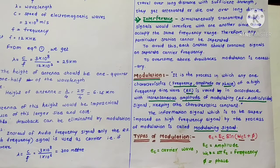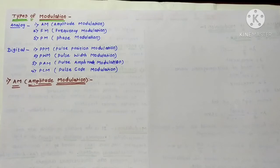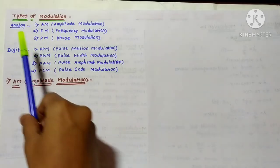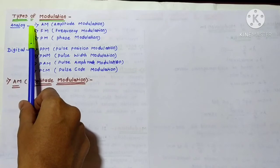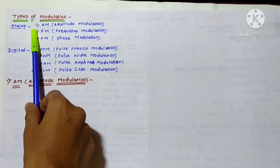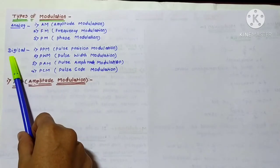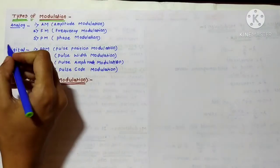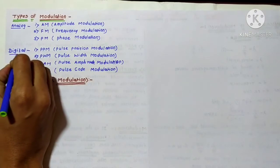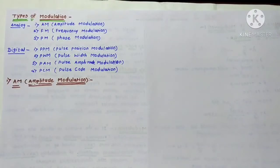There are two main types of modulation. The first type is analog modulation and the second is digital modulation, which you have already studied in the classification of communication.